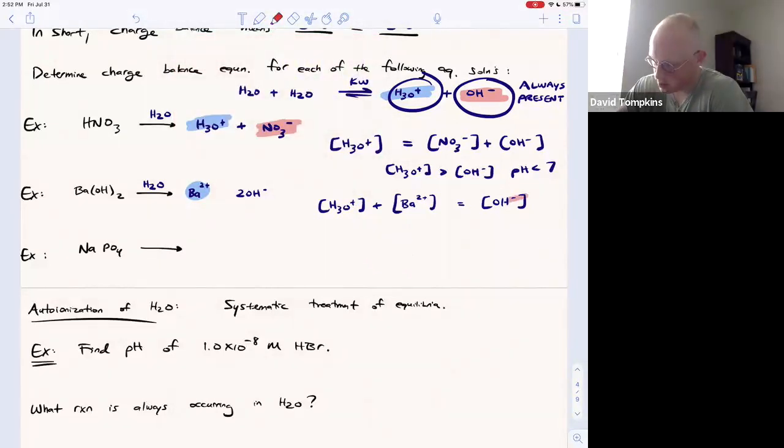But notice this is the first time we've seen a non-unity charge. We have a two plus charge. When you have any charge other than one, you must make that charge the coefficient as well. And this may seem counterintuitive, but it will take two of these hydroxides to cancel every one barium because barium has two charges.